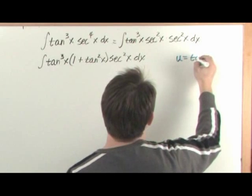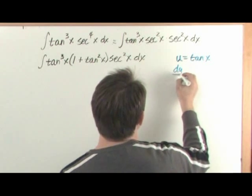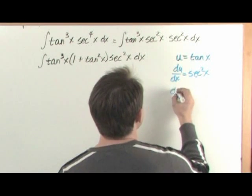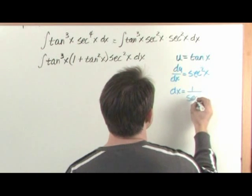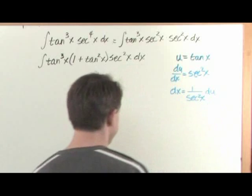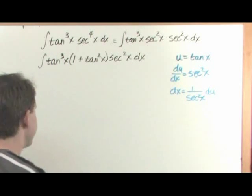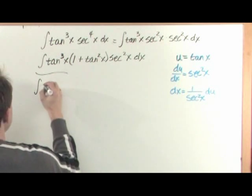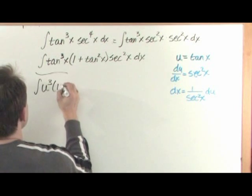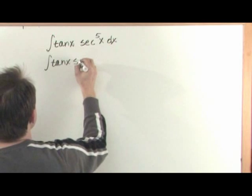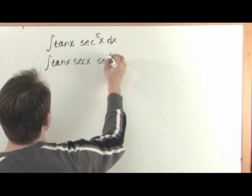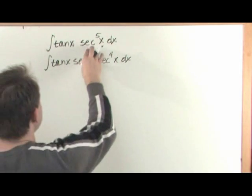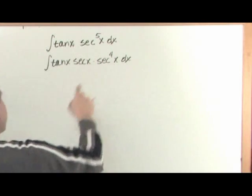u equals tangent of x, du dx equals derivative of tangent is secant squared x. Then finally dx equals one over secant squared x du because we're going to end up needing that to plug in here. So let's go ahead and plug it in right now. Let's rewrite our integral as integral of tangent cubed, but we define u to be tangent, so it's u cubed times one plus u squared times secant x times secant to the fourth power of x dx. So you see a common theme. A lot of times what you'll end up doing is taking one of the powers and rewriting it as something else to let you make a cancellation.